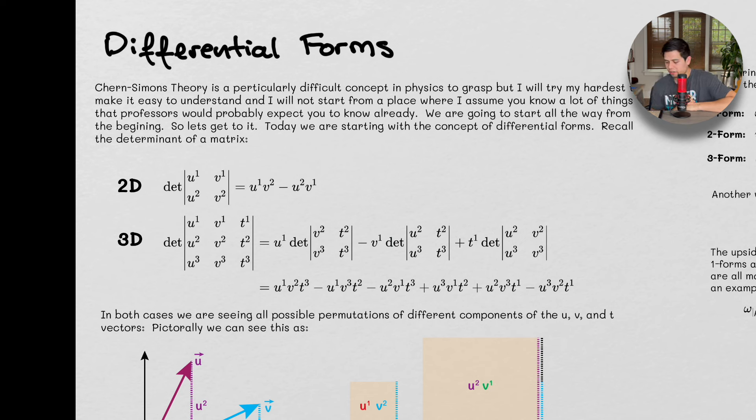Chern-Simons theory is a particularly difficult concept in physics, and so I'm going to try my hardest here to make everything easy to understand, but I'm not going to start from a place where I assume you know everything that professors would probably expect you to know already. So we're going to start all the way from the beginning.